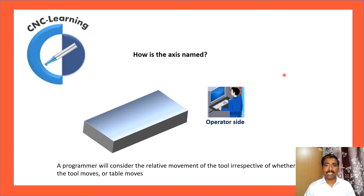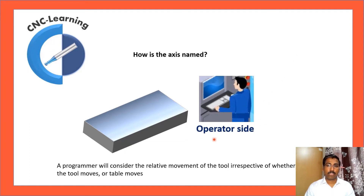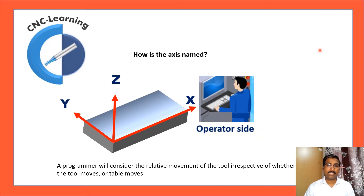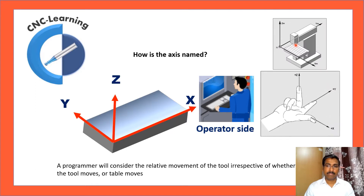First, let us see how the axes are named in a CNC milling machine. This is the operator side. For any machine, the spindle axis will be the Z axis, the horizontal axis will be the X axis, and the third axis will be the Y axis. You can see a small milling machine diagram showing X axis, Y axis, and Z axis — this is your spindle head.